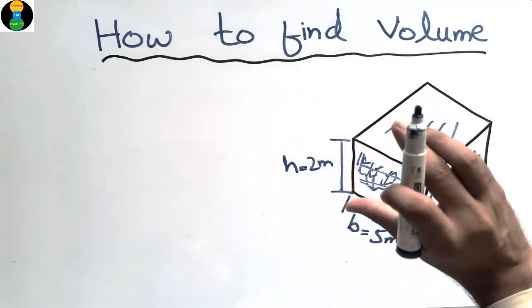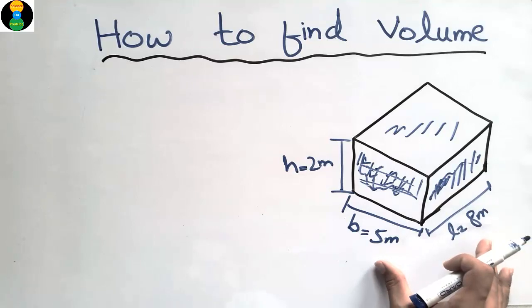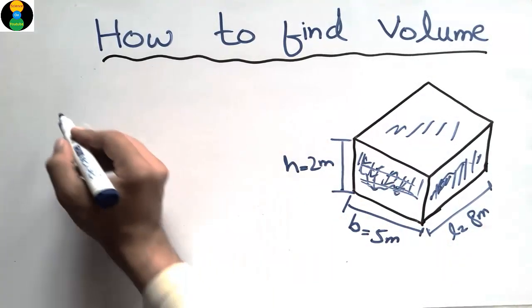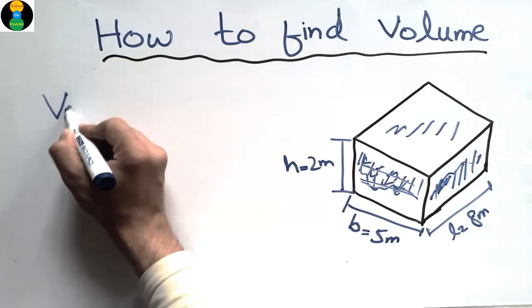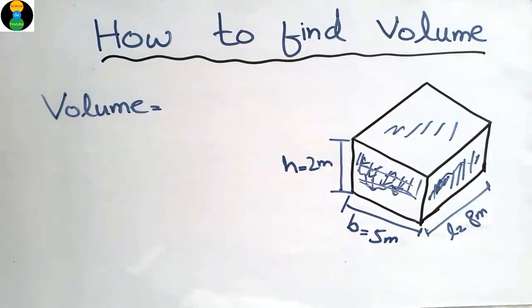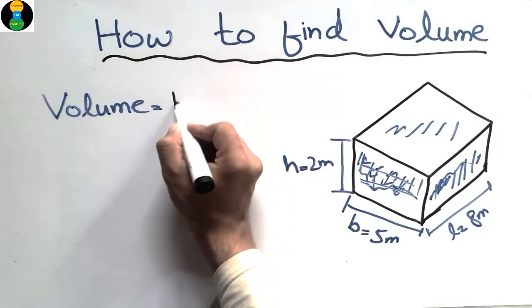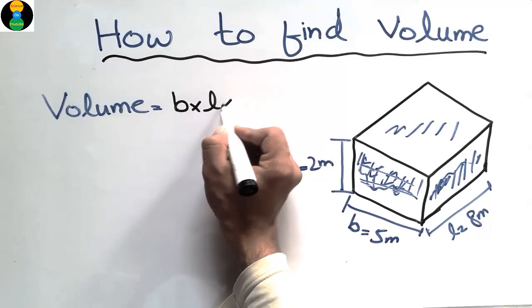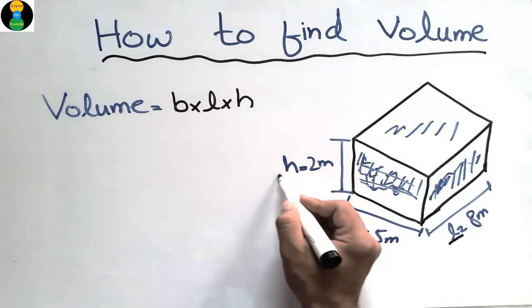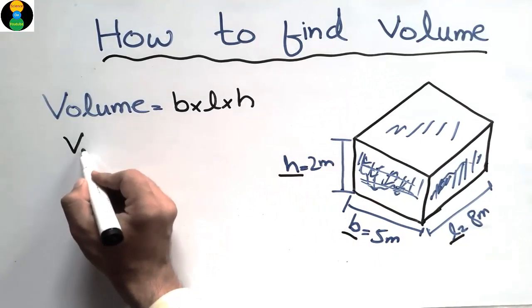We are interested to find the volume of this object. To find the volume, we should multiply these three dimensions with one another: the width with the length and with the height. When we multiply these three quantities we will get the volume.